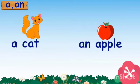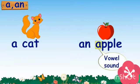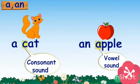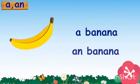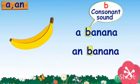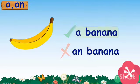So we learn to use A and AN before a singular naming word. The rule for using AN is that the naming word should begin with a vowel sound. The rule for using A is that the naming word should begin with a consonant sound. For example, why A banana and not AN banana? Because banana starts with the consonant sound of the letter B, so we use A.